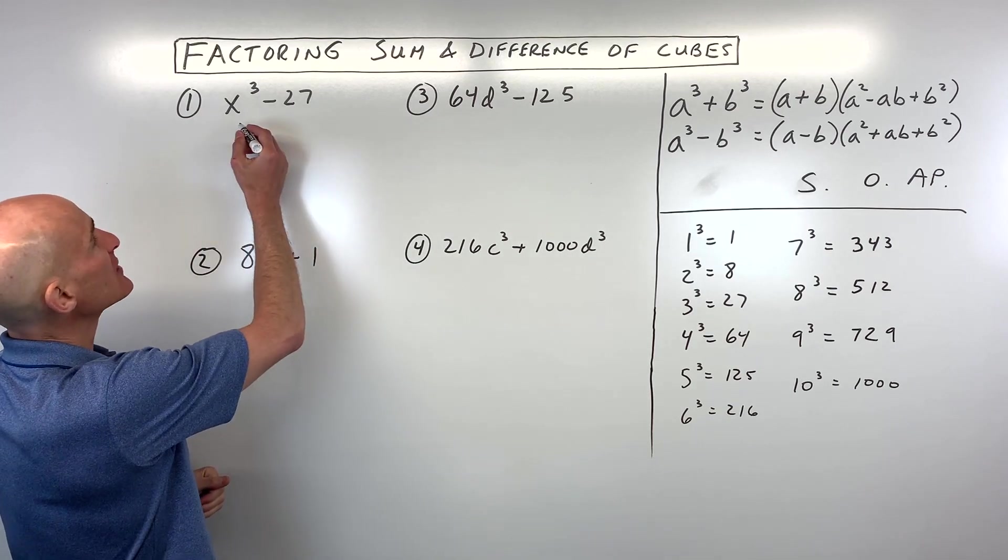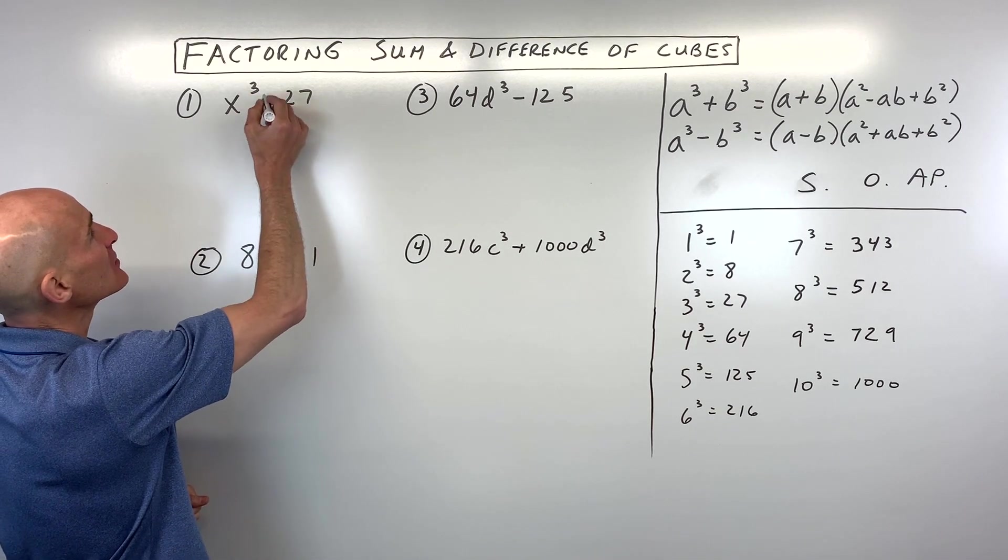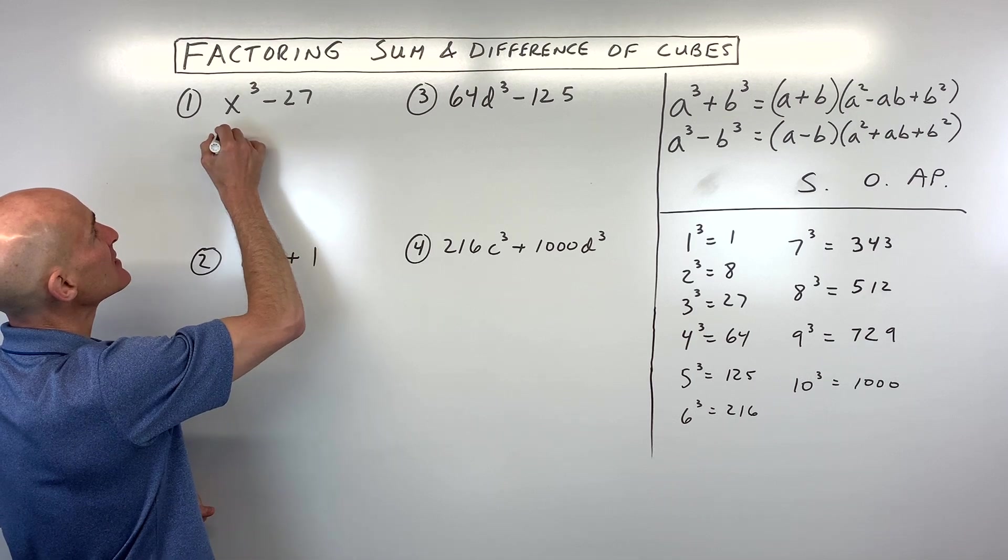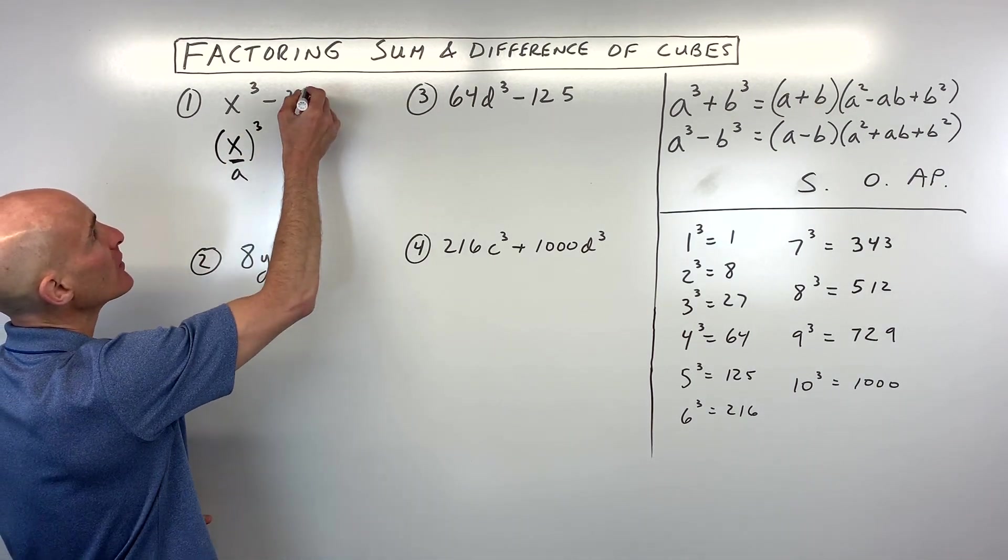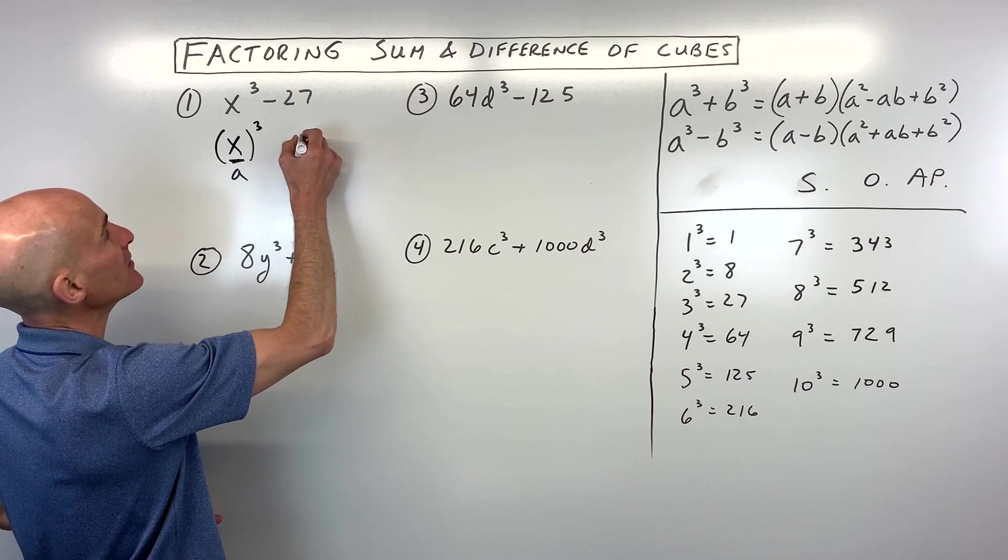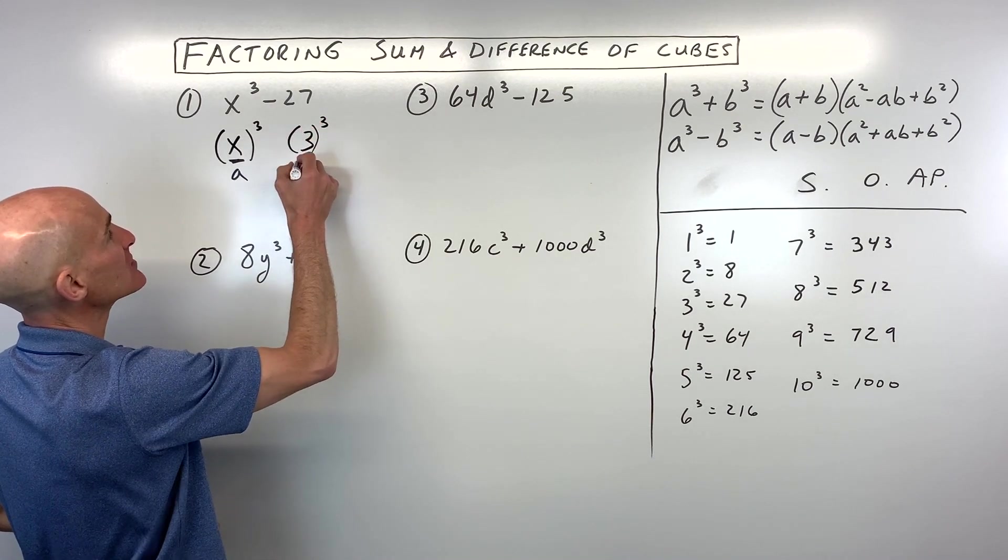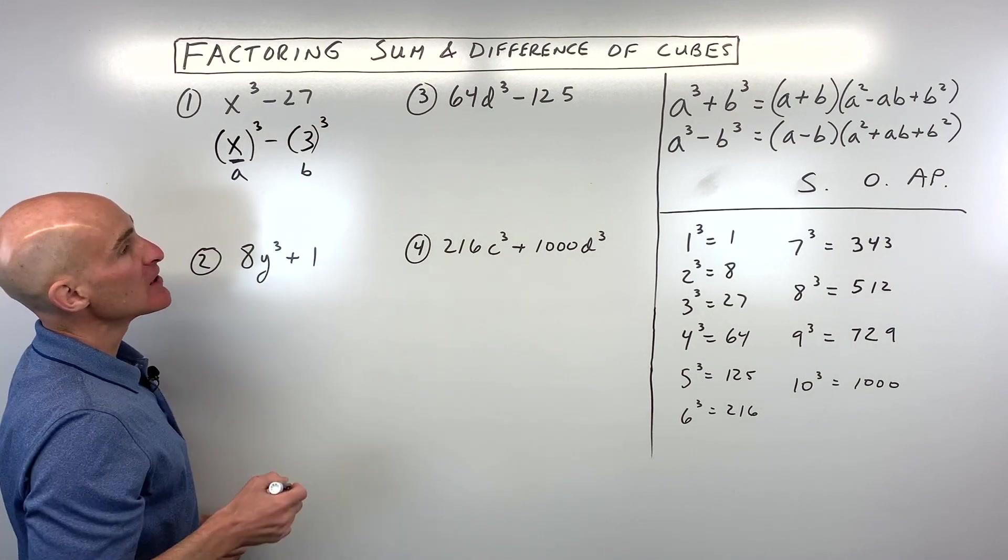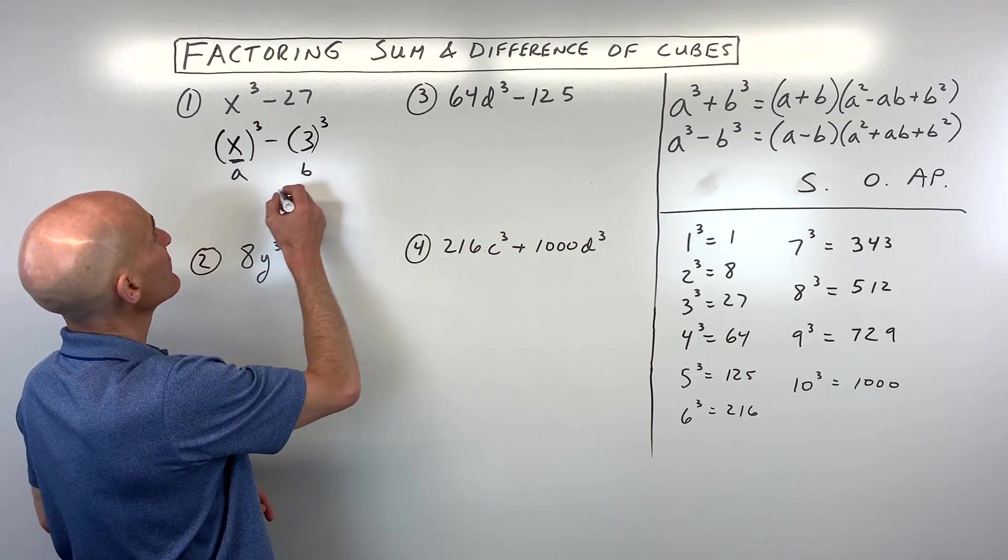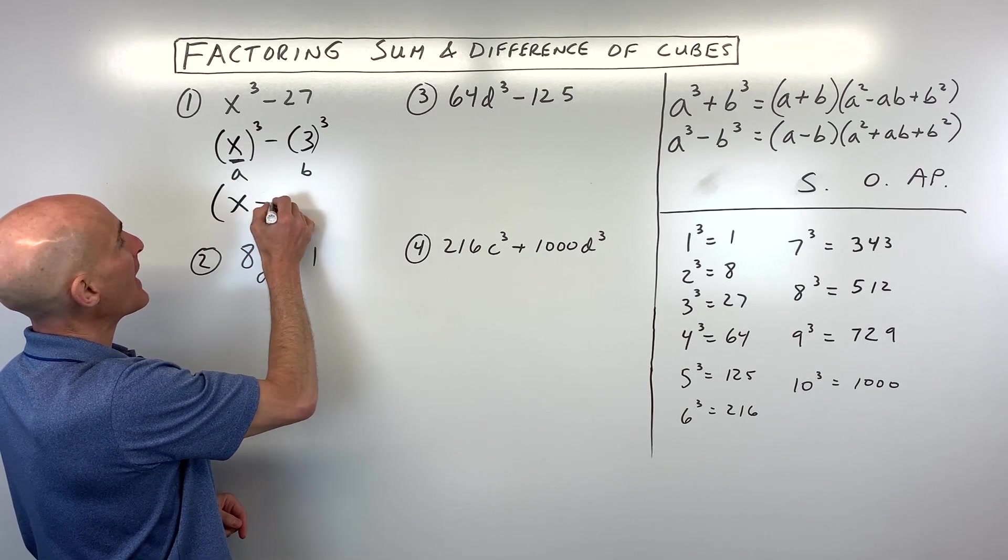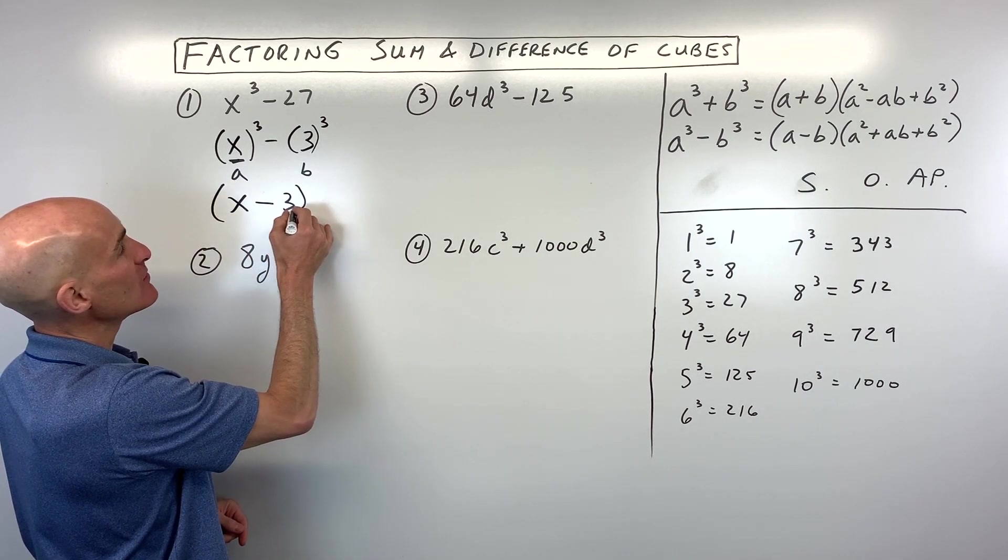The first one, x³ - 27. If I take the cube root of x³, that's really going to be just x. So this is our A value. When I take the cube root of 27, that's 3. So this is going to be our B value. So we're subtracting. This is a difference of two cubes. So we're going to start off with x - 3. So that's A - B.